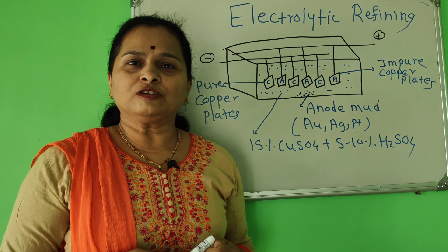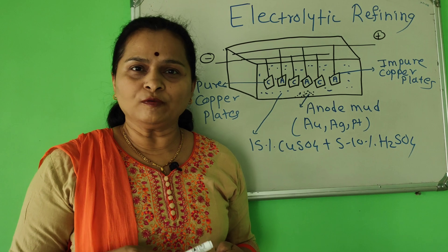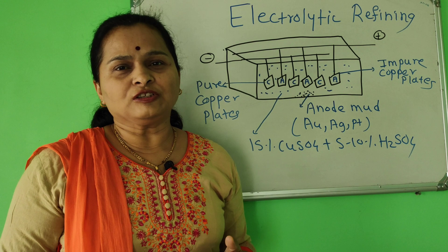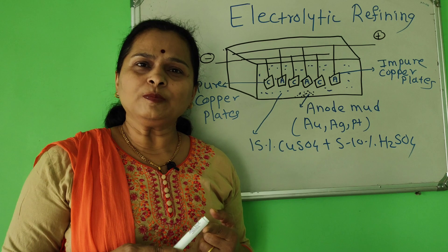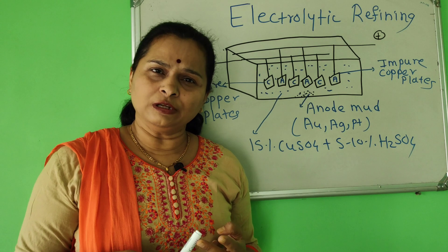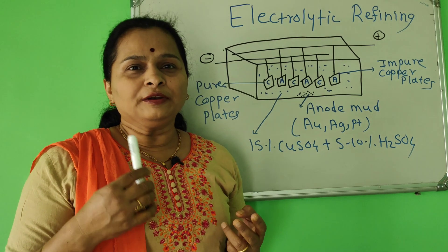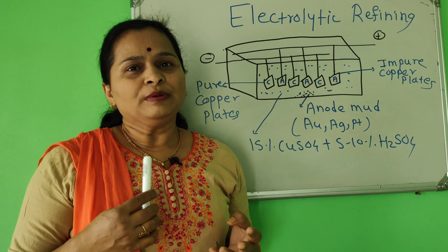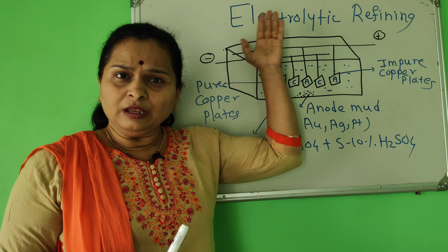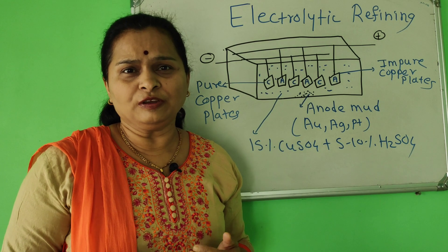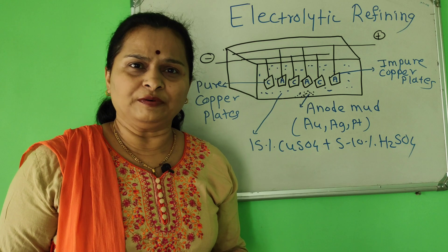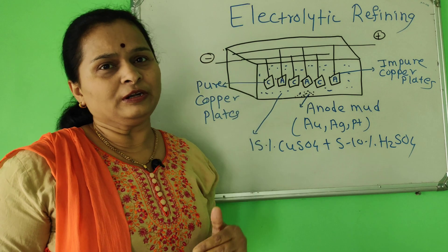The second part was extraction of copper from copper pyrite ore. In this extraction process, the physical process is flotation, then chemical process is roasting, then reduction by smelting, then bessemerization, and lastly electrolytic refining — that means purification of metal with the help of electric current. It is known as electrolytic refining.